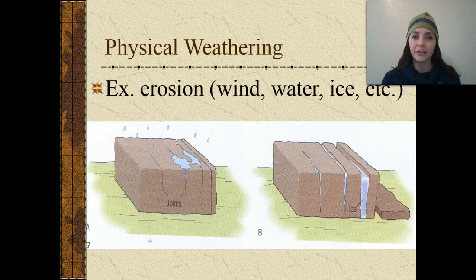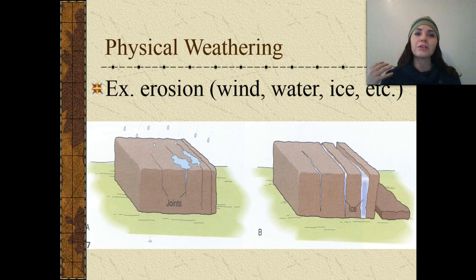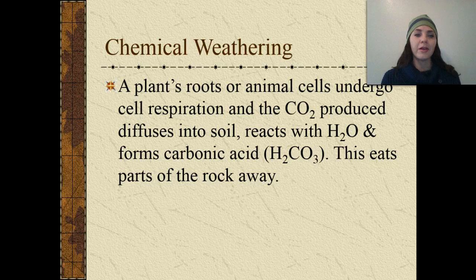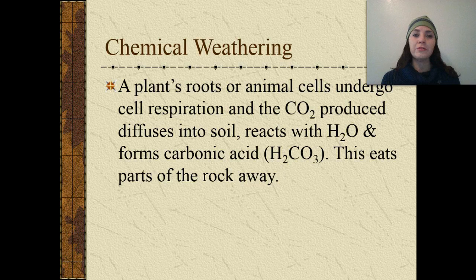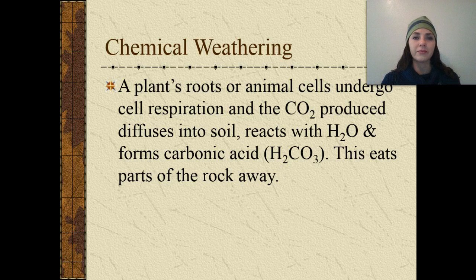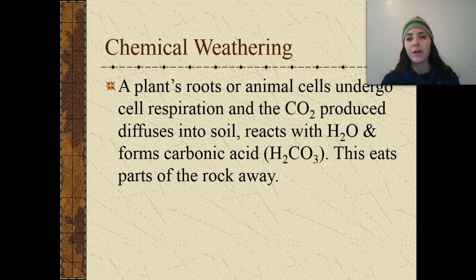We have different types of weathering. Physical weathering is erosion caused by wind, water, and ice, which slowly erodes rock. Chemical weathering occurs when plant roots or animal cells undergo cellular respiration and produce carbon dioxide. That CO₂ diffuses into the soil and reacts with water to form carbonic acid, which eats away at parts of the rock, breaking it apart.